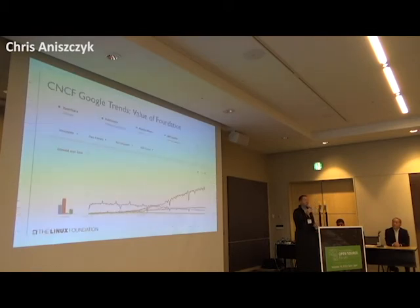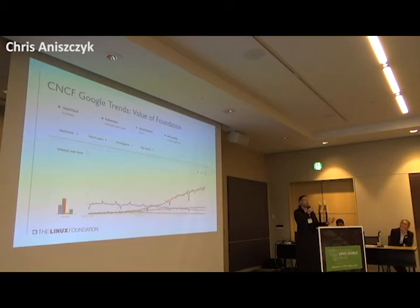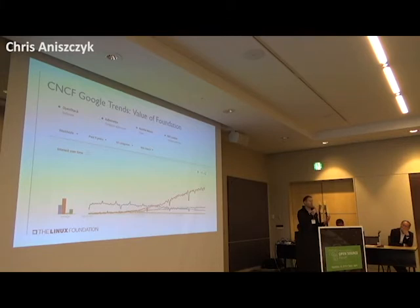Jim really likes this Google Trends diagram. You can see that when CNCF was founded around December 2015, comparing OpenStack, Kubernetes, Mesos, and Lambda — once we started getting the flywheel going, supporting the organization, building an ecosystem, convincing the other clouds to get involved and launching a conformance program — about two years in, we basically surpassed OpenStack, Lambda, and all that. This is truly the role of the Foundation: to build an ecosystem, build a brand, build excitement, and sustain these projects.